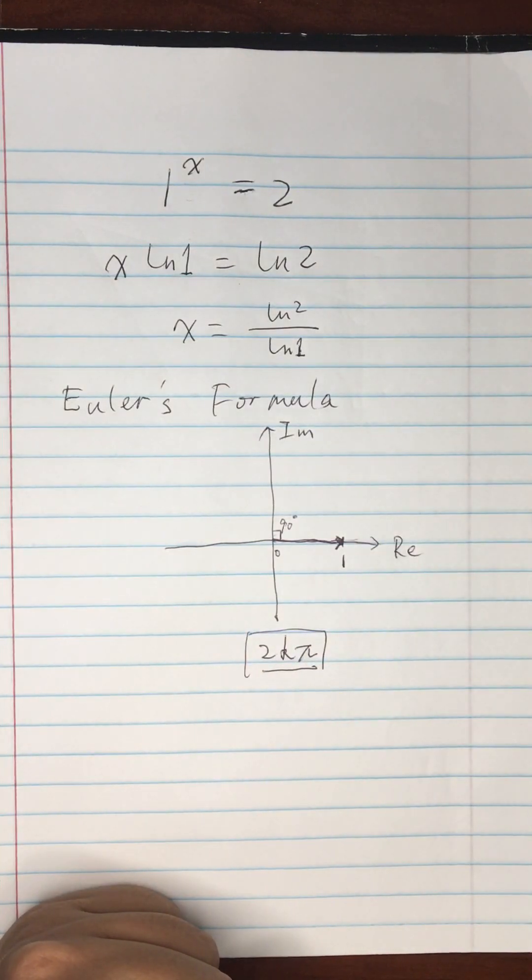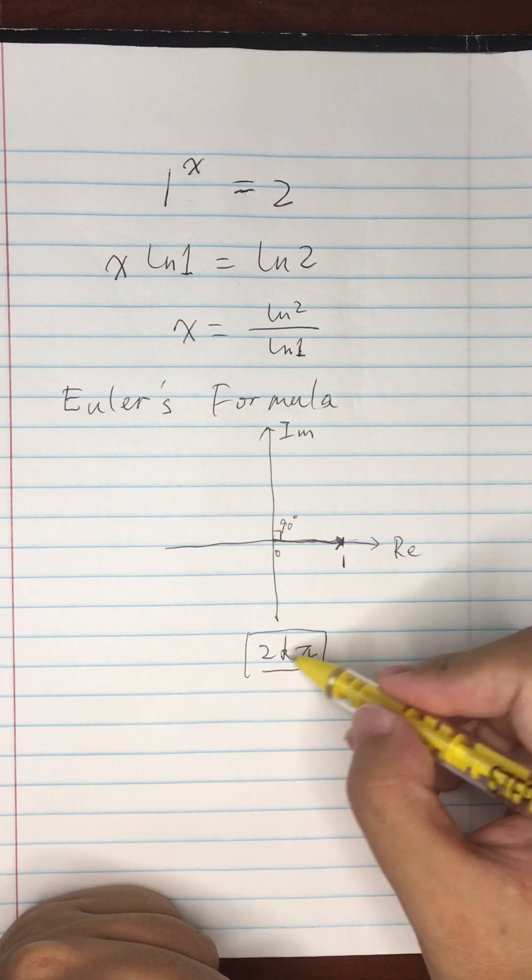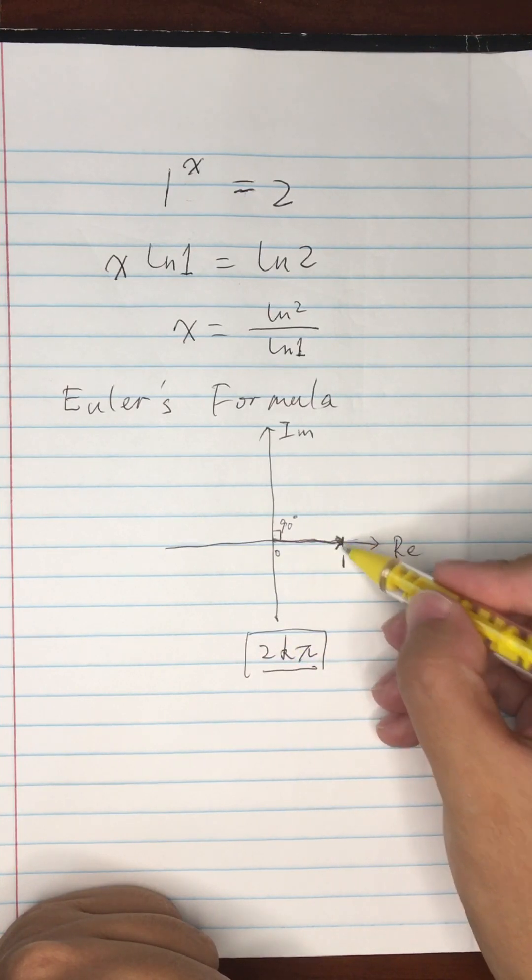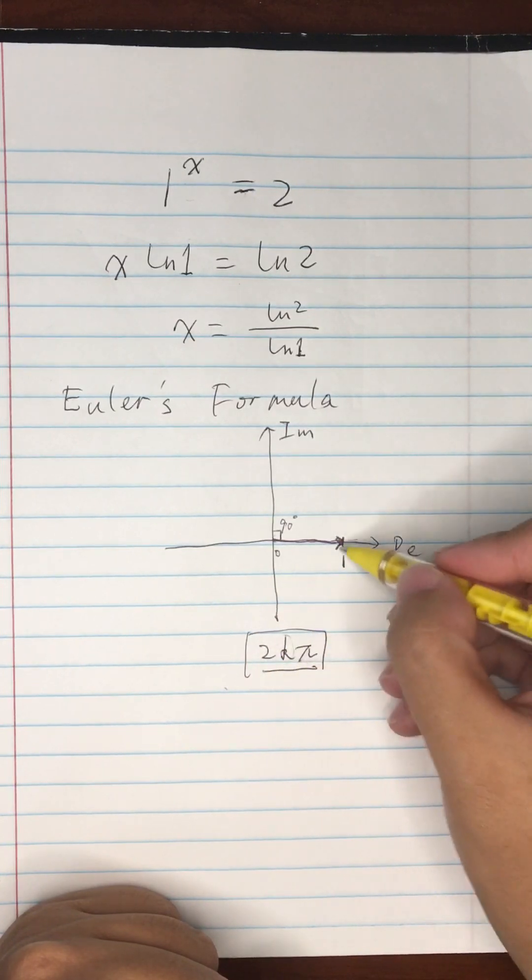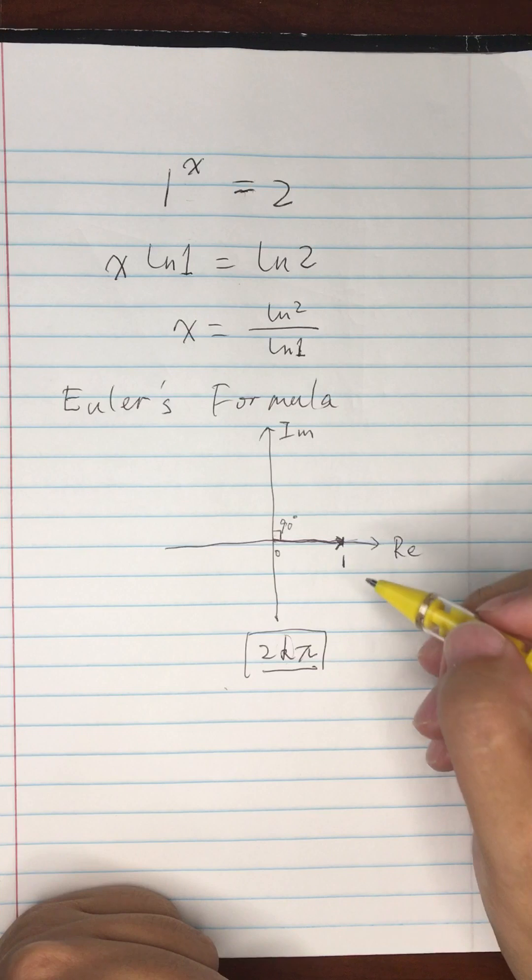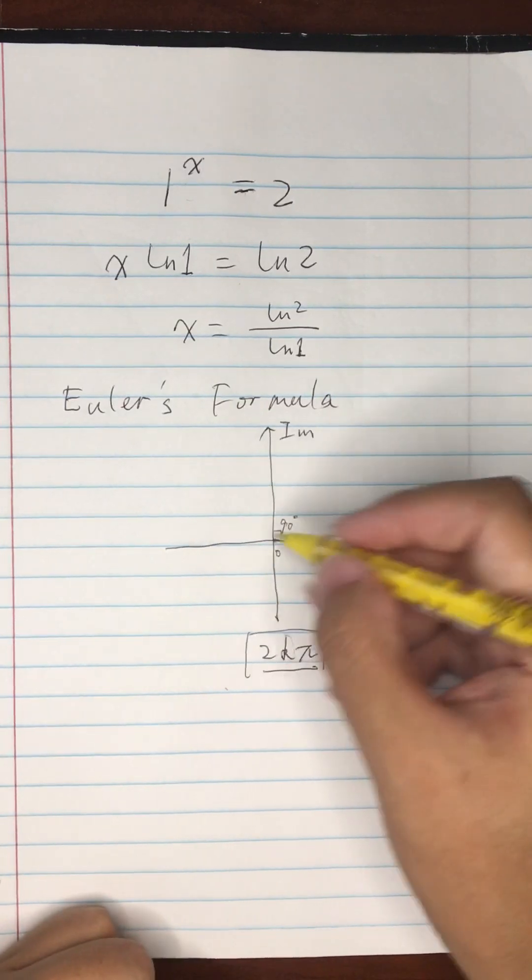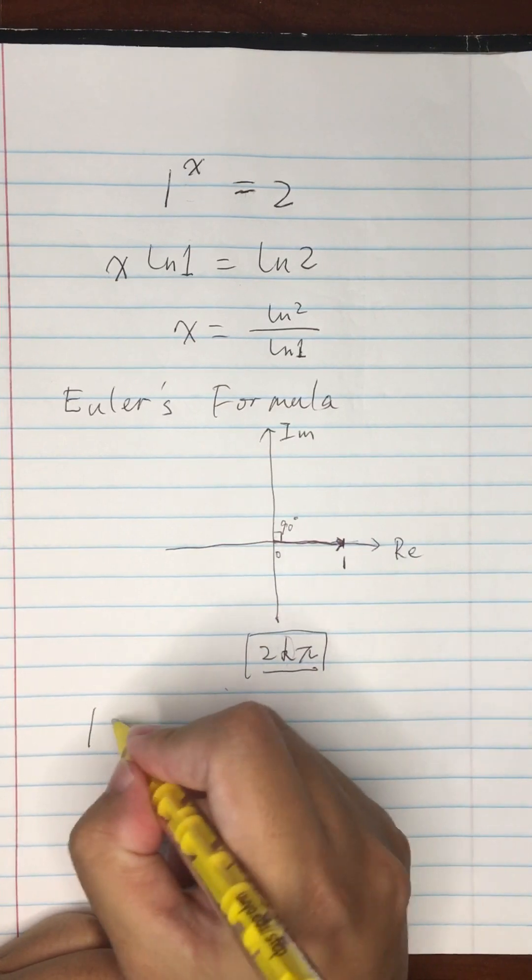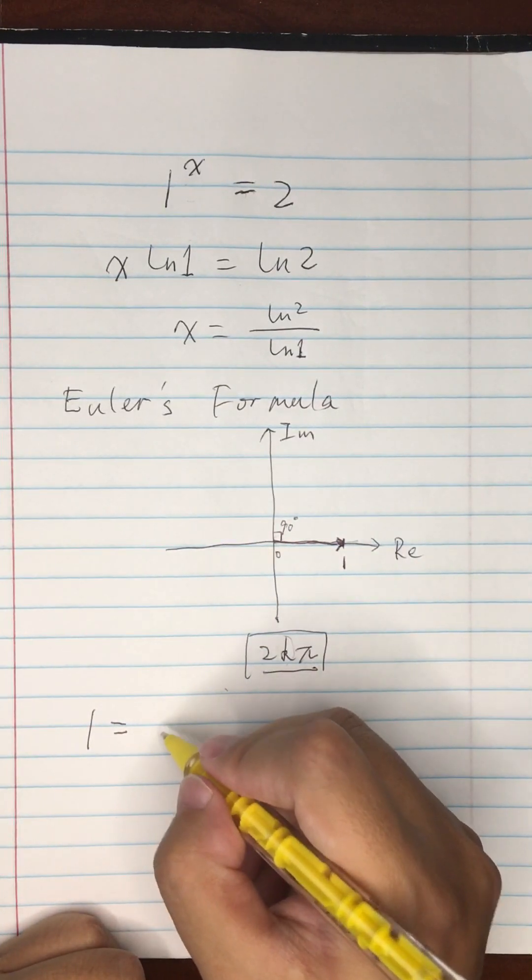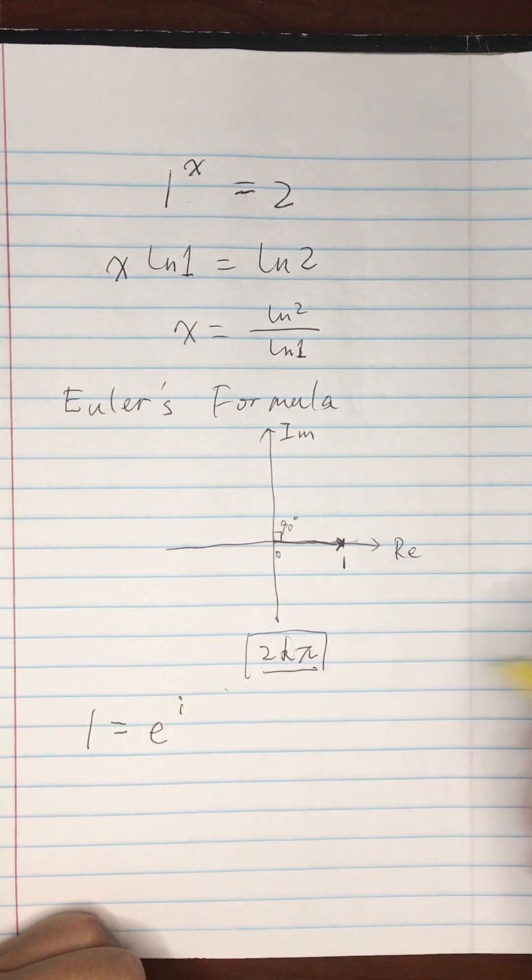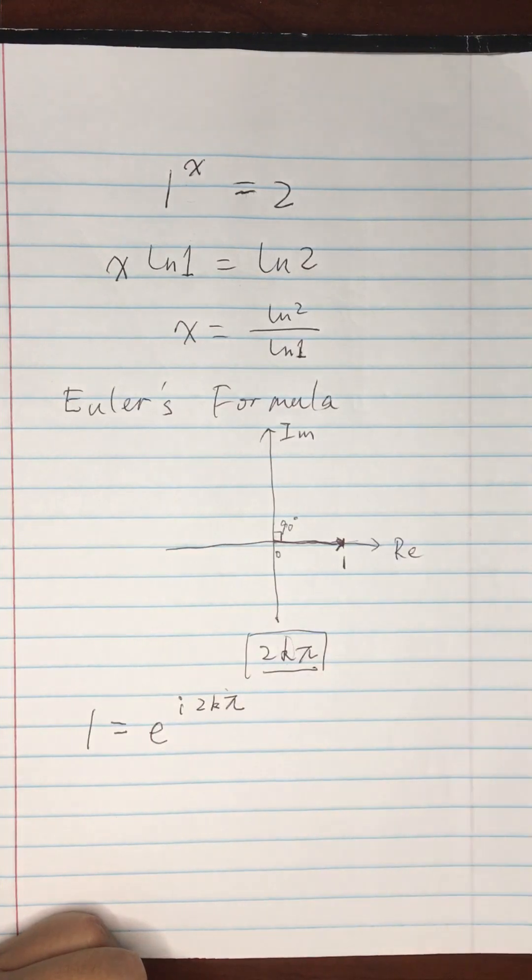If k equals 0 then the angle is 0 and you get 1. But as long as it's an integer multiple of 2π, the angle still works and gives you 1. So in the complex plane, 1 actually equals e to the i times the angle, which is 2kπ.